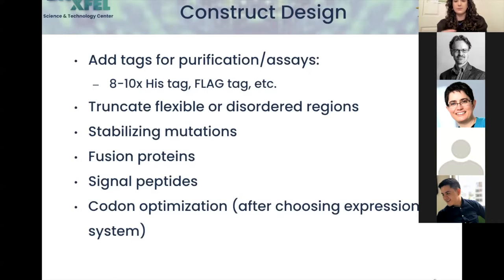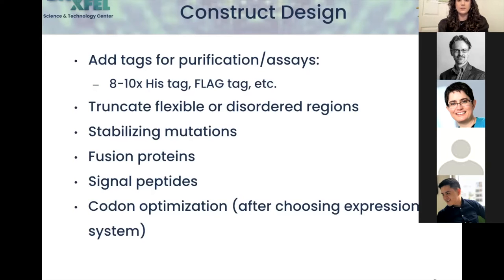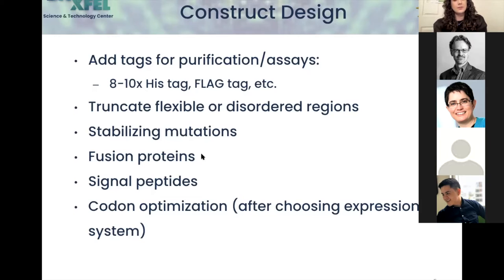As mentioned, you'll have issues crystallizing if you have too many flexible regions. There are ways to add stabilizing mutations based on the protein — for example, if it's a receptor and you want to lock it into one conformation, like an active versus inactive state, you might mutate it after reviewing the literature on similar proteins. For fusion proteins, especially with certain receptors like G protein-coupled receptors, I'll show an example in the next slide.